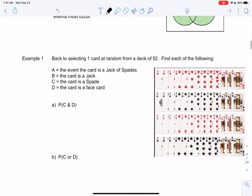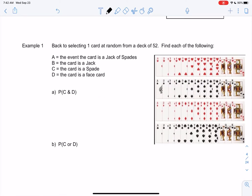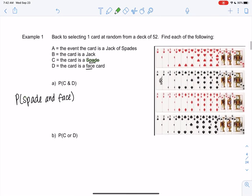So let's see what that looks like for a deck of cards. We already looked at this example, but we're going to add some ands and ors. We're going to look at C and D, which means the probability of a spade and a face card. So I'll color code them. Spades was this entire row.